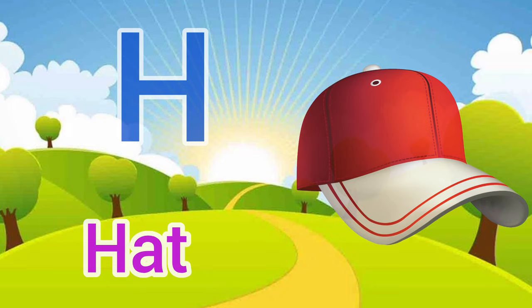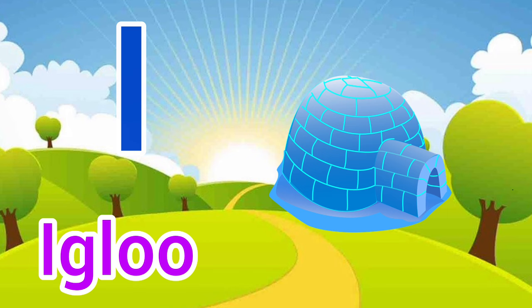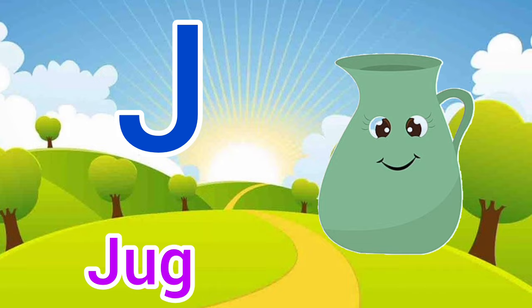I for igloo, igloo means igloo. J for jug, jug means jug.